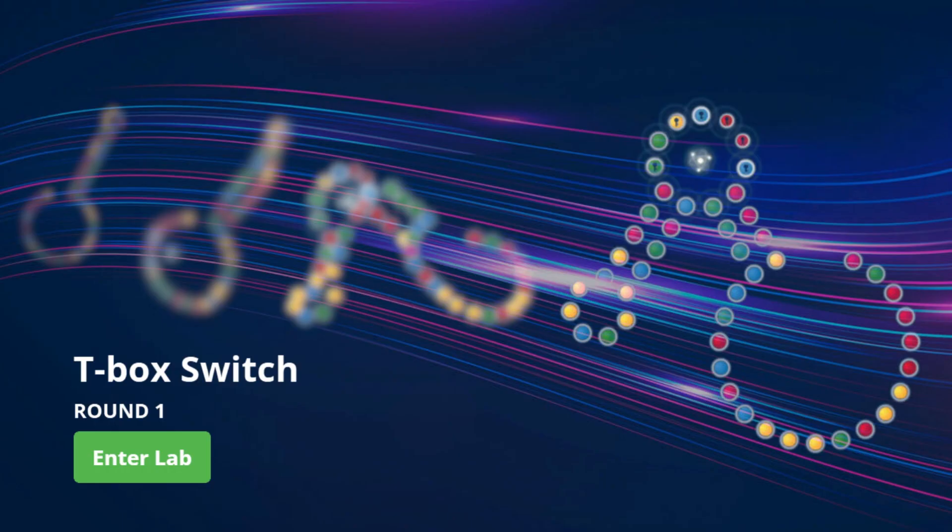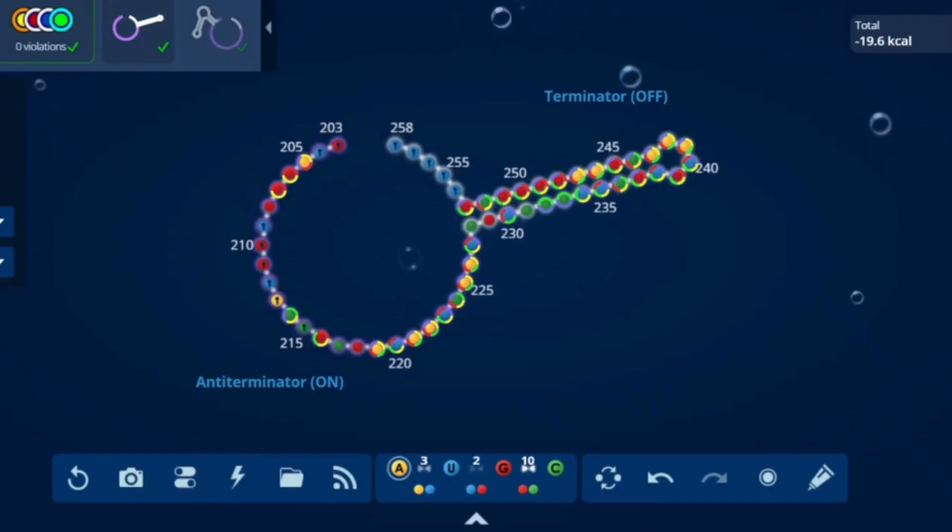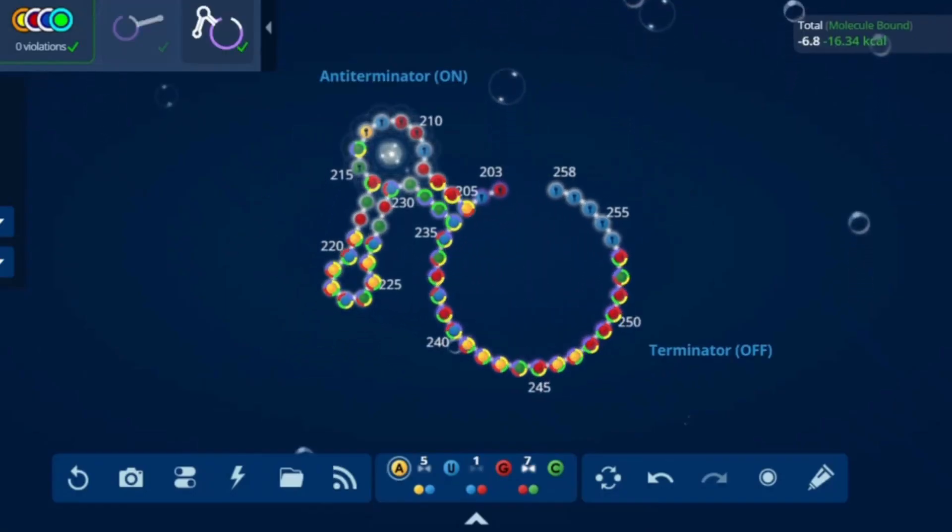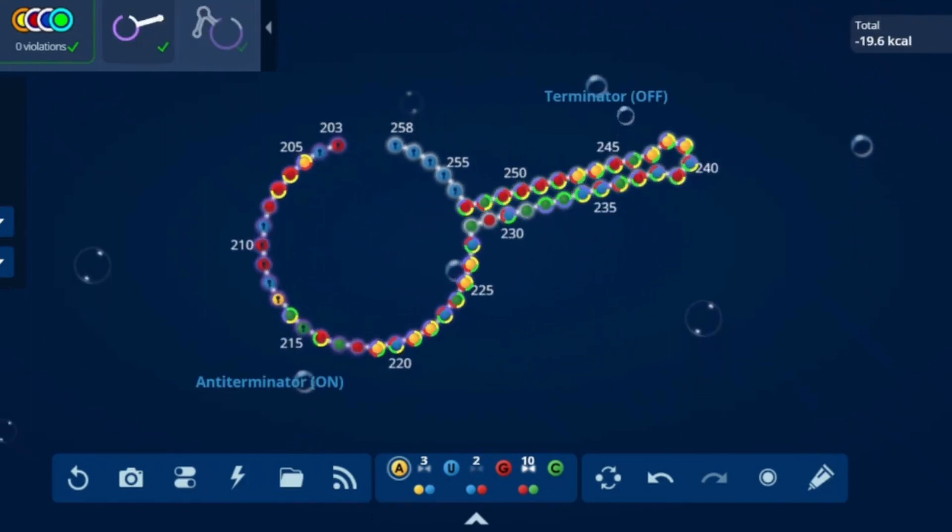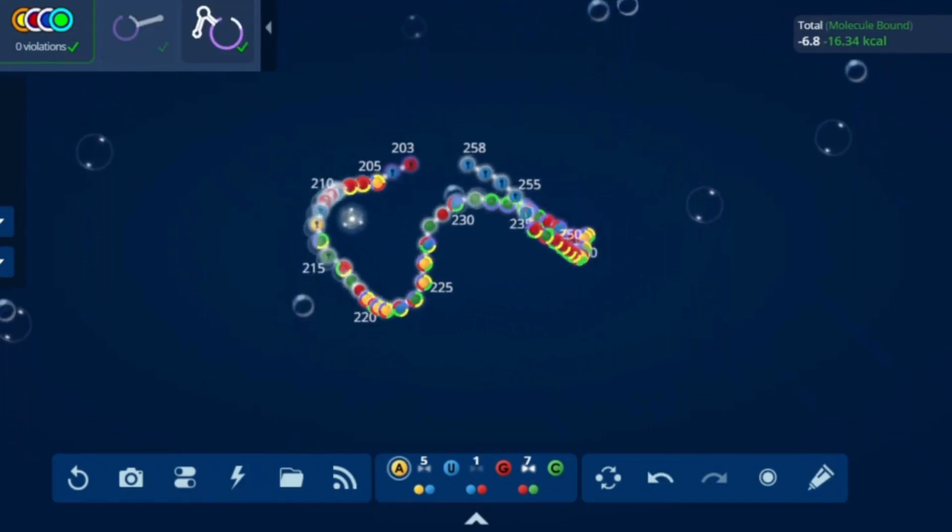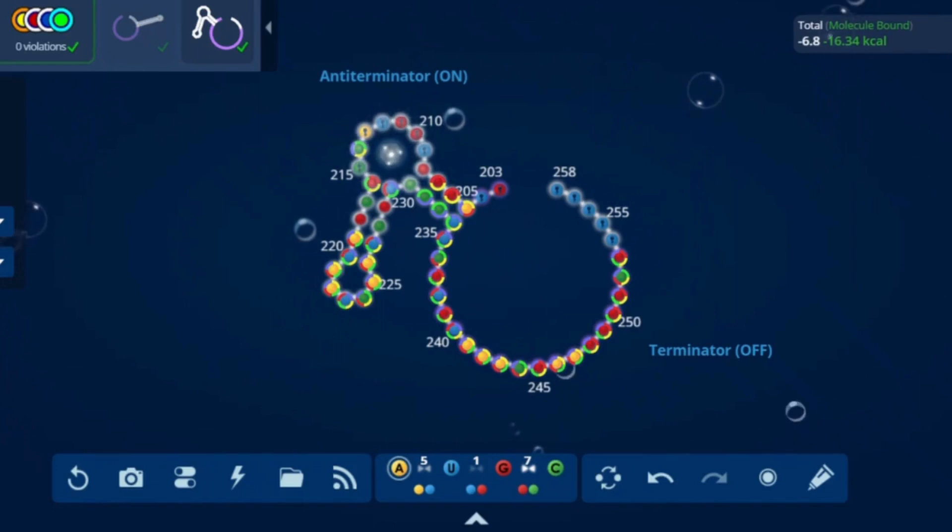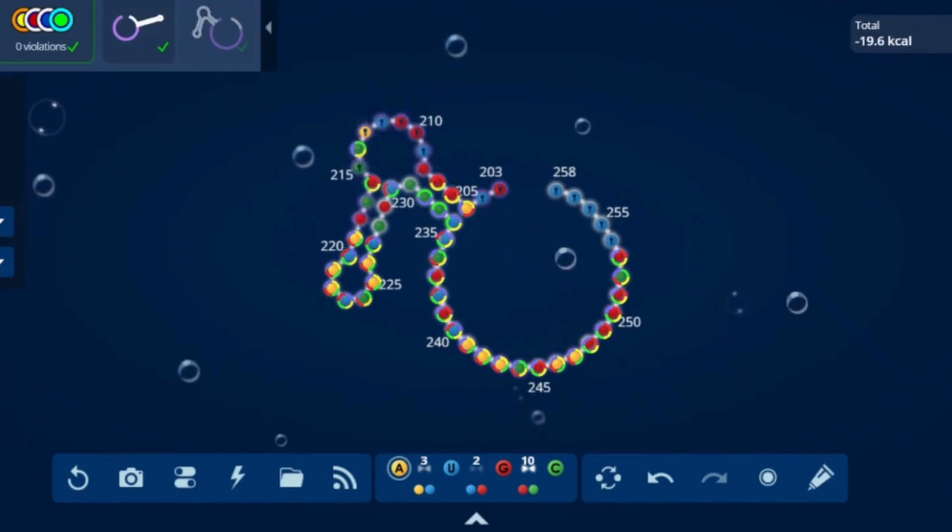The purpose of this t-box switch lab is to make a t-box switch that can send out a stronger signal to the cell. We know from previous labs that the most effective t-box switches can be made with 12 or fewer mutations.